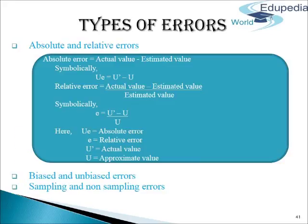Now we come to the types of errors. First, Absolute and Relative Errors. Absolute error is the difference between the actual true value and the estimated approximate value, while Relative Error is the ratio of the absolute error to the approximate value.